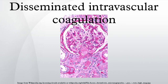Disseminated intravascular coagulation, also known as disseminated intravascular coagulopathy or less commonly as consumptive coagulopathy, is a pathological process characterized by the widespread activation of the clotting cascade that results in the formation of blood clots in the small blood vessels throughout the body.